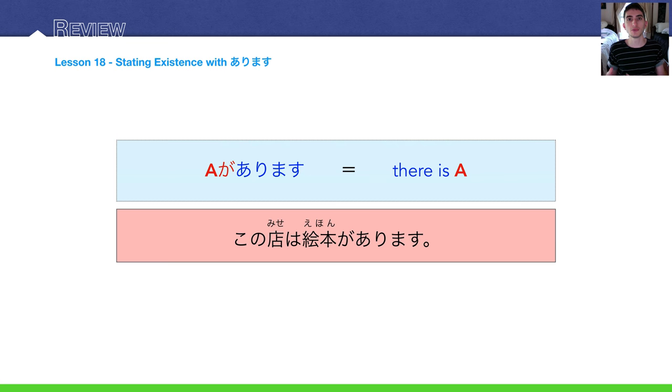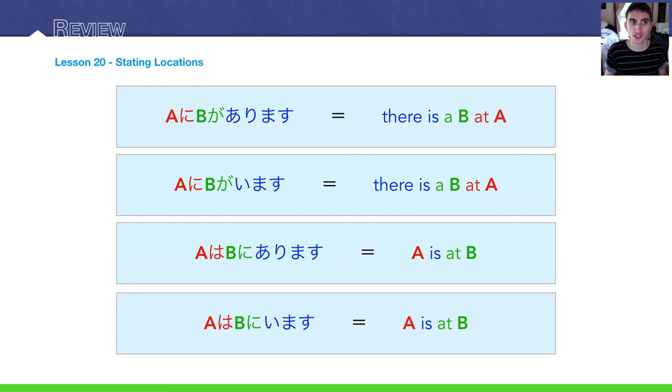But, we're talking about this mise, this store. So, as for this store, there are picture books. Now, this is better translated in English as, there are picture books in this store, but I think it's better to think of it as, this store has picture books. A lot of times, whatever A is, for A ga arimasu, is translated as have, has. This store has picture books.